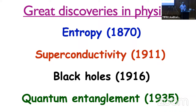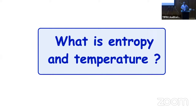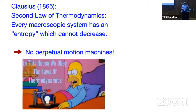So let me begin with entropy. What is entropy and temperature? The concept of entropy really has its origins in thermodynamics. Clausius in 1865 formulated the second law of thermodynamics: that every macroscopic system has an entropy which cannot decrease. In more practical terms, it is simply the statement that you cannot make perpetual motion machines.